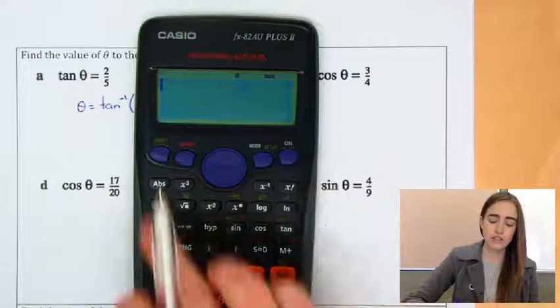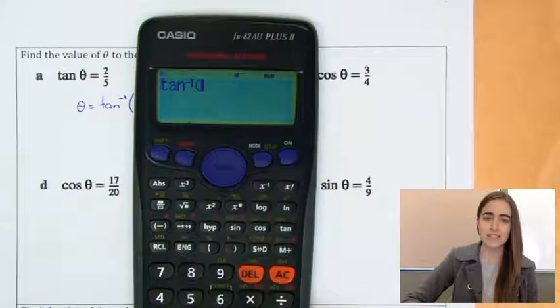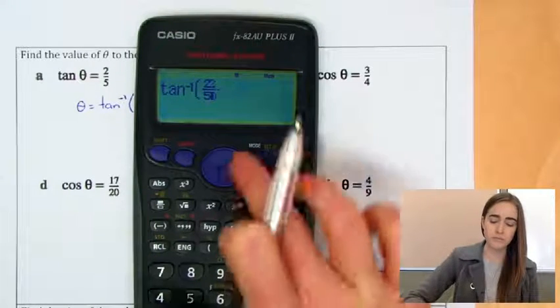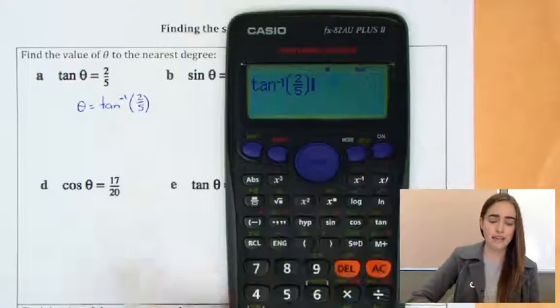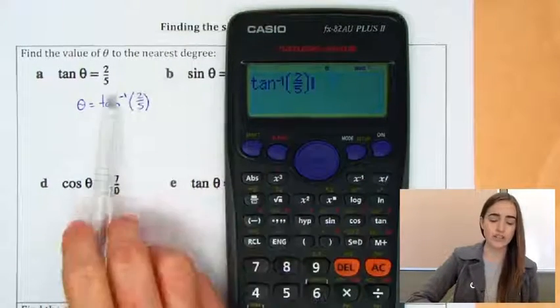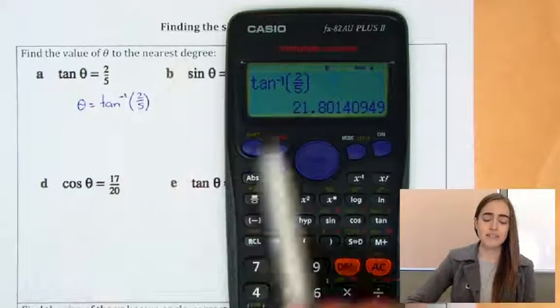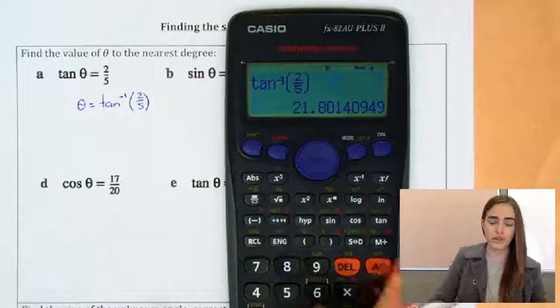So to get tan inverse, we're going to have to press shift and then tan, and then we can put our fraction in. So we're going to write tan inverse of that fraction that we're given. Hit equals. And then because we're asked to answer to the nearest degree, that's going to be 22 degrees.